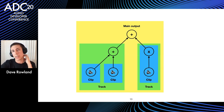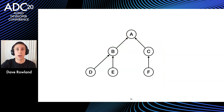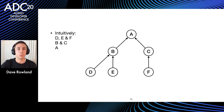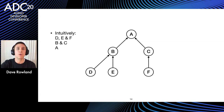When it comes to processing a graph, the purpose of the node doesn't actually matter. We can rewrite this using just letters, which helps when we're trying to form an order to process the nodes. Intuitively we can say we need to process D, E, and F before B and C, and those before A, because that's the direction of the graph. But we need to formalize this to write code for it.